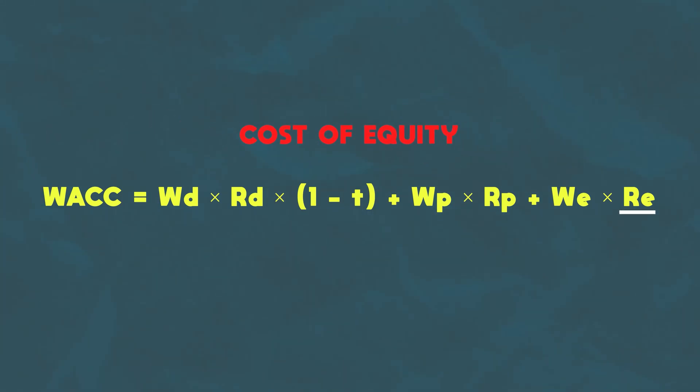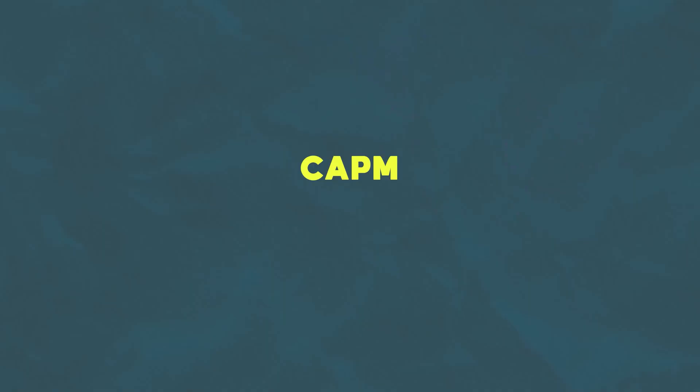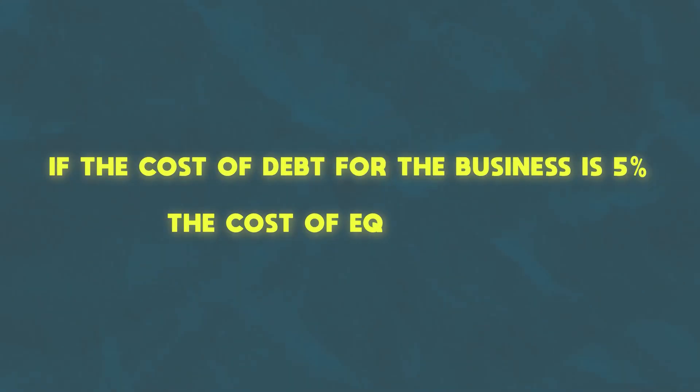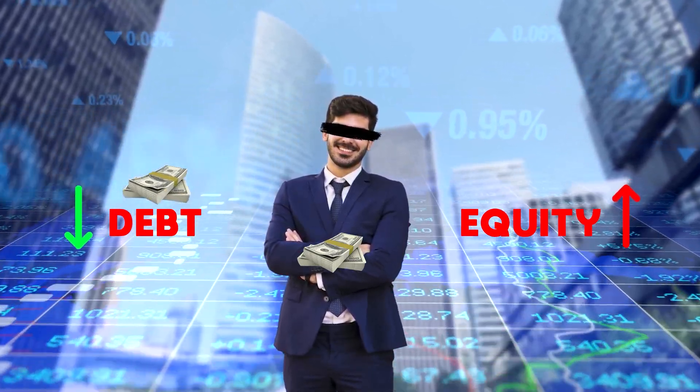The cost of equity is the return that equity investors expect for buying a percentage ownership in the business. It's calculated using the CAPM formula — the Capital Asset Pricing Model — which is a separate topic for another video. For now, just know that the cost of equity is always higher than the cost of debt. If the cost of debt is 5%, let's assume the cost of equity is 15%. Why always higher? Because investing in a company's equity is always riskier than investing in its debt. If a company goes bankrupt, the law demands debt holders get paid back first. Debt holders usually recover at least some money, while equity holders get nothing. So equity holders always expect higher returns to compensate for that additional risk.